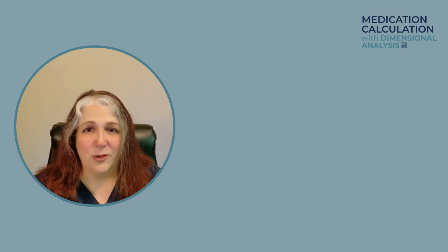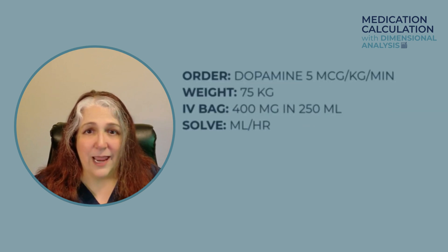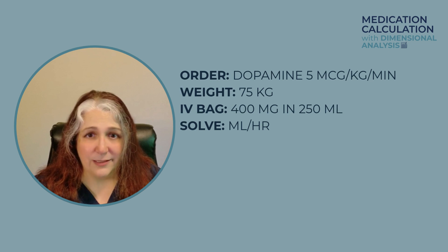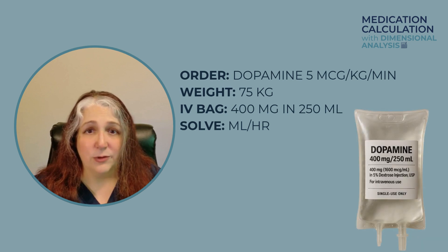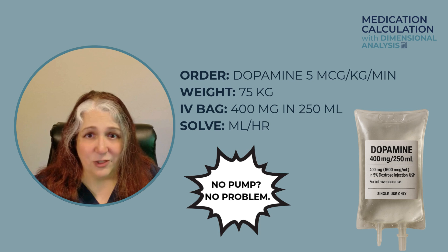You're caring for a patient with a dopamine drip running. The provider has just changed the orders — now he wants you to run the dopamine at 5 micrograms per kilogram per minute. Your patient weighs 75 kilograms and the IV bag in front of you is labeled dopamine 400 milligrams in 250 milliliters. No smart pump, no pre-filled settings. It's up to you to calculate how many milliliters per hour to set the infusion. Let's train your nurse brain and break it down.